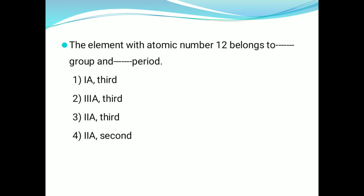Okay, first one: the element with atomic number 12 belongs to which group and which period? Atomic number 12 — one element in the periodic table. A group is determined by the periodic table. In the outermost orbital, the electrons determine the group.